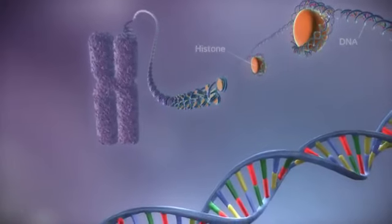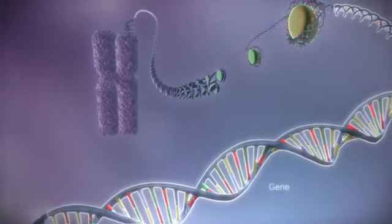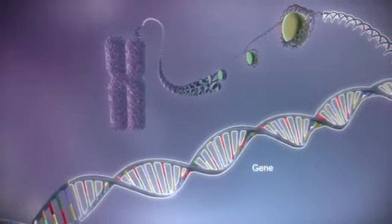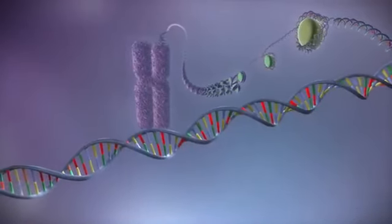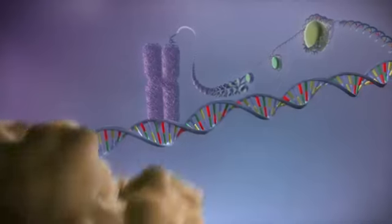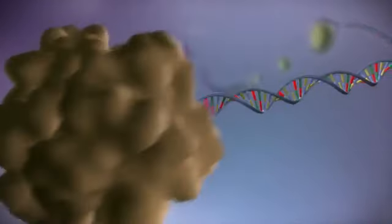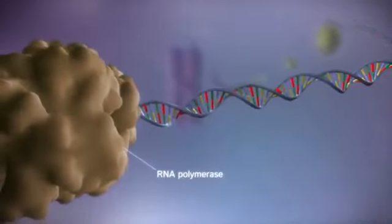Within the DNA are sections called genes. These genes contain the instructions for making proteins. When a gene is switched on, an enzyme called RNA polymerase attaches to the start of the gene.